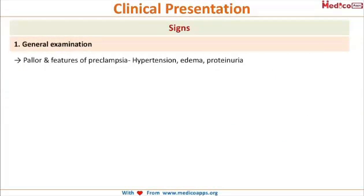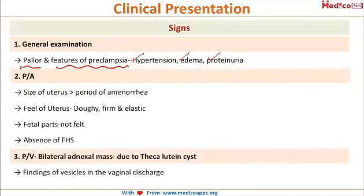On general examination, the patient can have pallor, and there can be features of preeclampsia. This is because there is failure of trophoblastic invasion of the maternal spiral arteries, so they are not converted into low-resistance vessels, and PIH develops in these patients — and that too before 20 weeks of gestation. So the patient can present with hypertension, edema, and proteinuria.